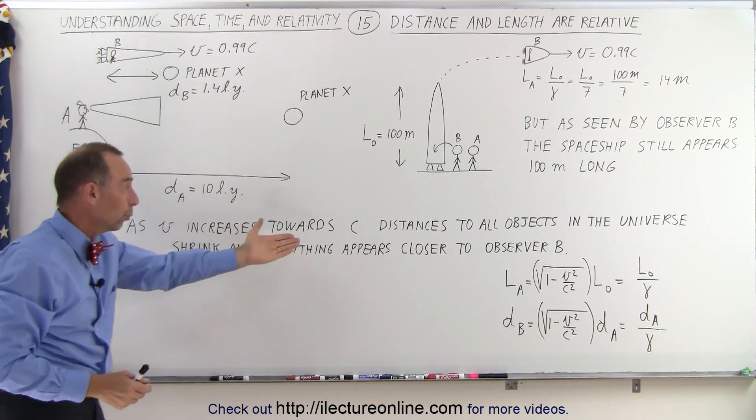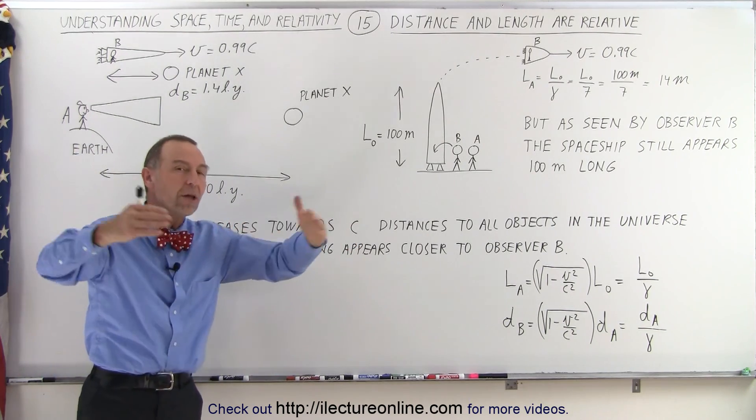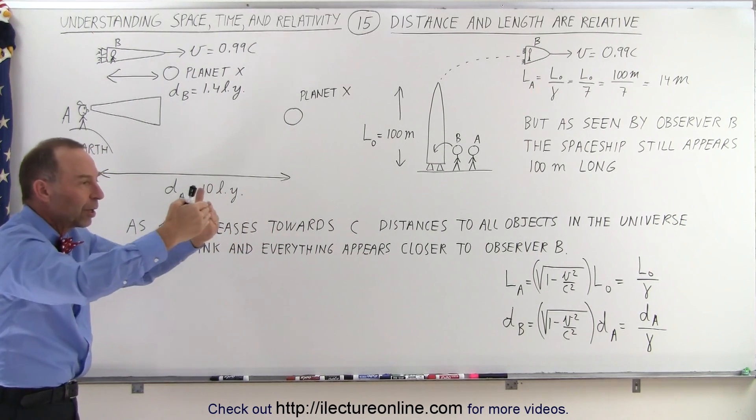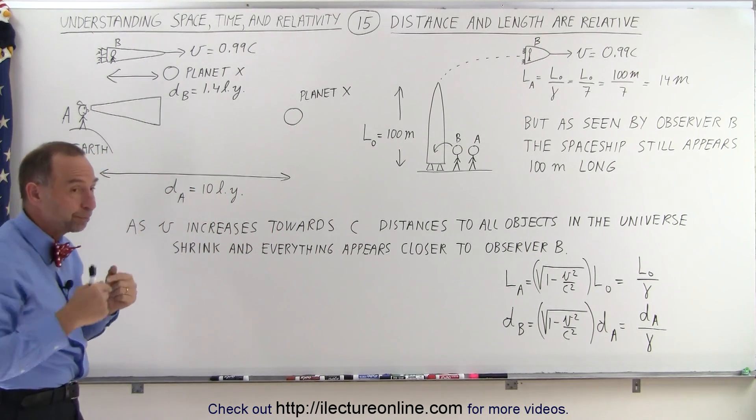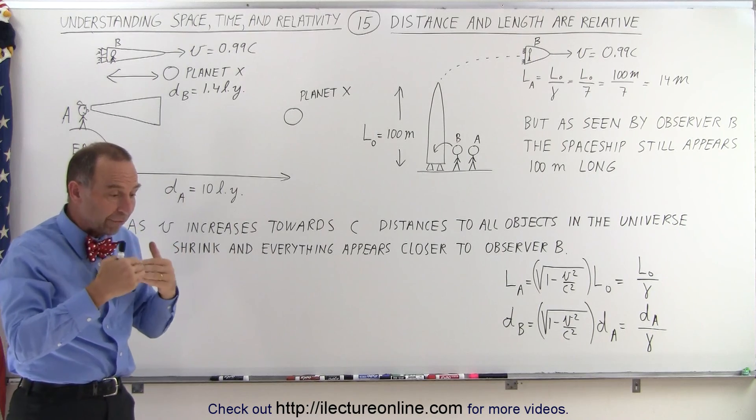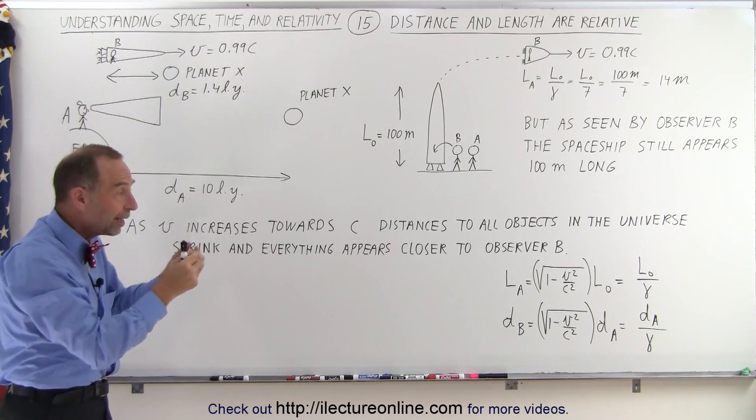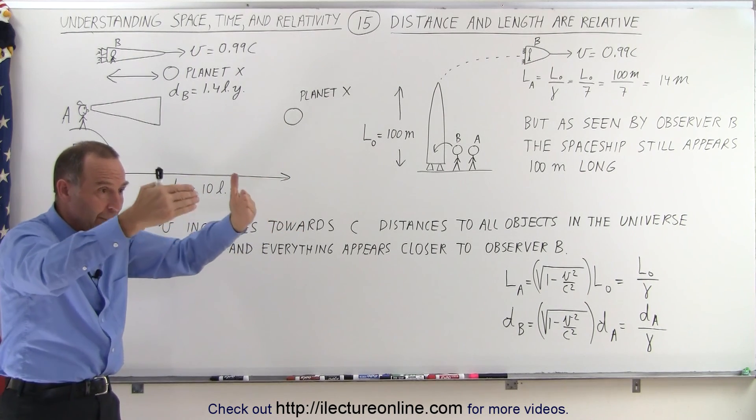Matter of fact, as V increases towards C, distances to all objects in the universe appear to shrink, and everything appears to become closer and closer. In other words, as you travel through the universe at higher and higher speeds, closer and closer to the speed of light, everything appears to become closer and closer.